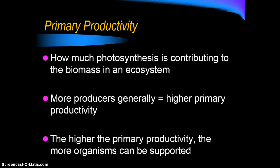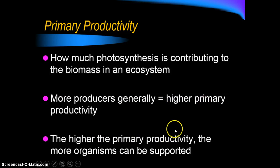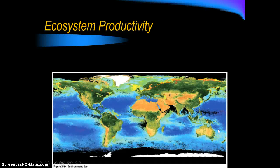An important concept here is primary productivity, which basically means how much photosynthesis is contributing to the biomass in an ecosystem — in other words, how much energy those plants are preserving as food for other organisms. Generally, the more producers you have, the higher your primary productivity will be, and the higher the primary productivity, the more organisms that ecosystem can support. When we look at biomes, we'll compare them in terms of primary productivity to see which can support more life.